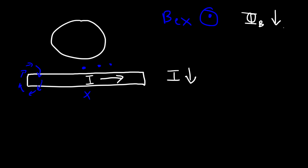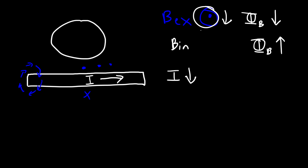If the current decreases, the magnetic field created by that current decreases, which means we have a decrease in flux. The system doesn't like that — it's going to try to increase the flux and bring it back to equilibrium. So it needs to create an induced magnetic field that will increase the flux. To increase it, the induced magnetic field should be in the same direction as the external magnetic field, not the opposite. When the system supports a decrease in flux, the induced field has to be in the same direction.